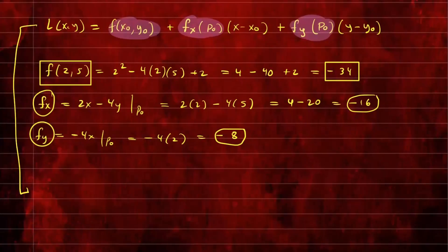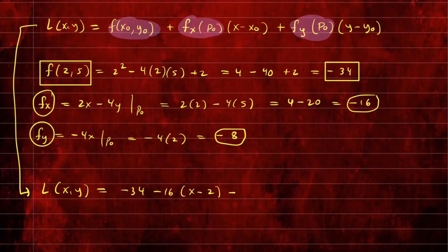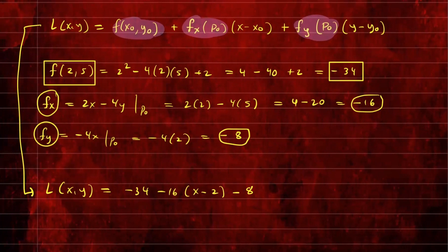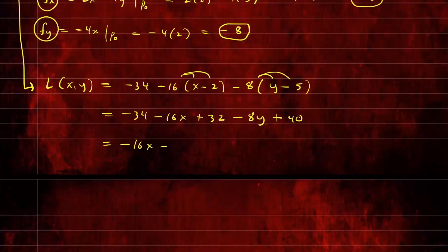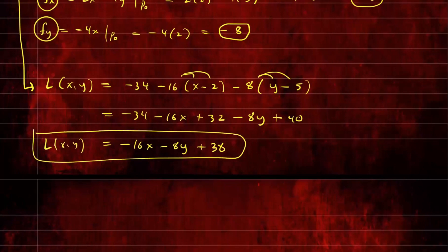Our local linearization L(x,y) in two variables is going to be f(x₀, y₀), which is -34, plus the partial of f with respect to x at that point, which is -16, times (x - 2), plus -8 (the partial of f with respect to y) times (y - 5). Distributing these out gives us -34 - 16x + 32 - 8y + 40. Combining common terms, we get -16x - 8y + 38. This is our linearization at the point (2, 5).